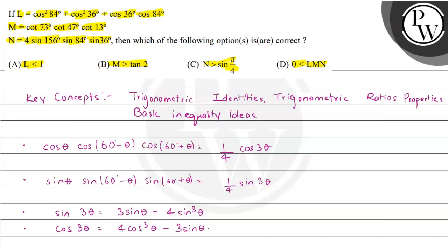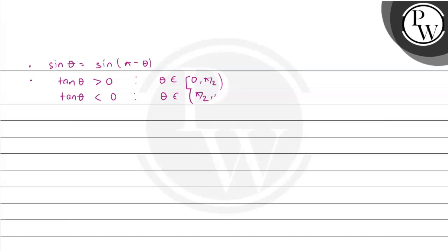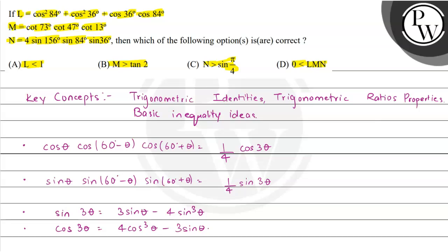Using these basic trigonometric identities, the ratio property we'll be using is sine of theta equals sine of pi minus theta. The last thing we'll be using is the property of tan: tan of theta is greater than 0 as long as theta belongs to 0 to pi by 2 in the principal domain, and tan of theta is negative on pi by 2 to pi. We should also know the value of pi, radian measure, and degree-radian conversion.